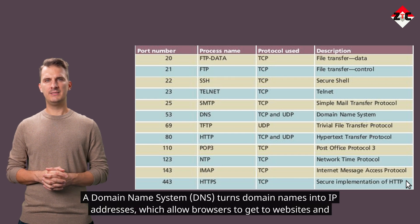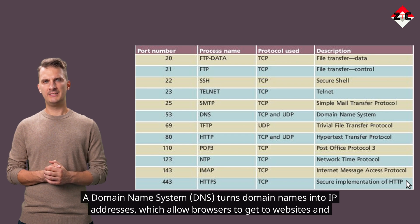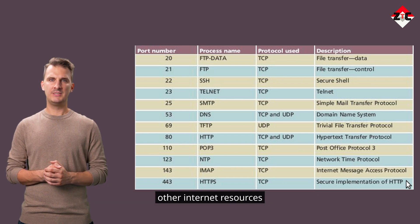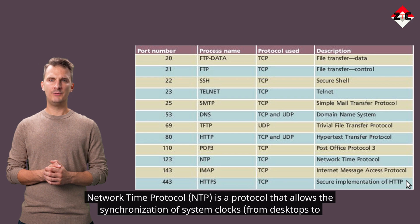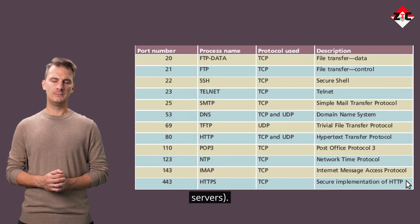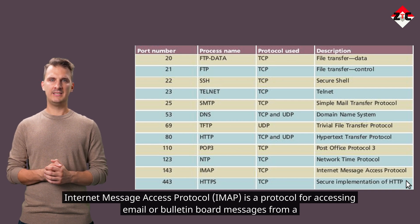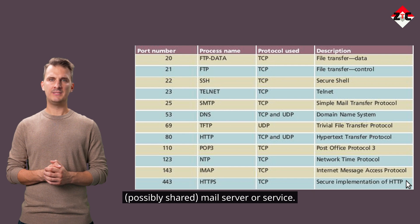DNS — Domain Name System — turns domain names into IP addresses, which allows browsers to reach websites and other internet resources. NTP — Network Time Protocol — allows the synchronization of system clocks across devices, from desktops to servers. IMAP — Internet Message Access Protocol — is a protocol for accessing email or bulletin board messages from a shared mail server or service.